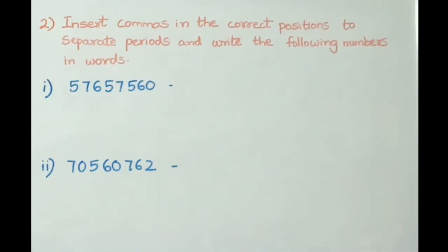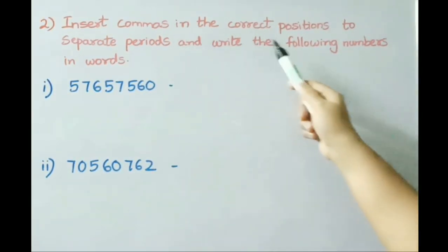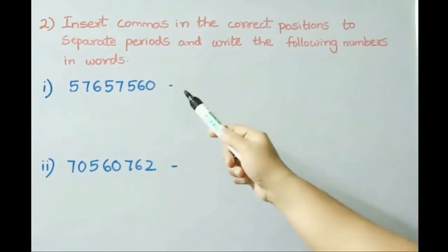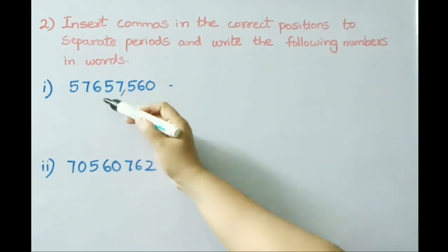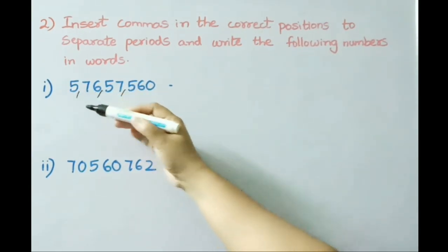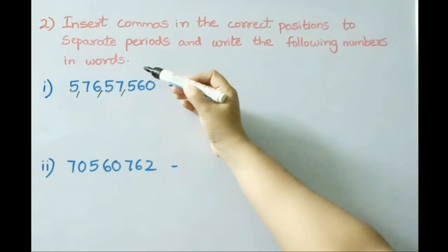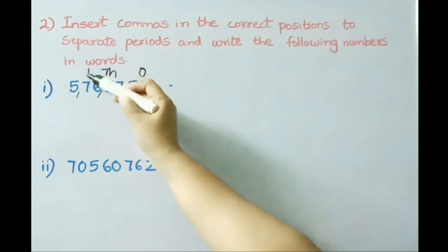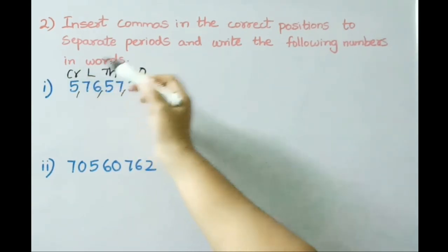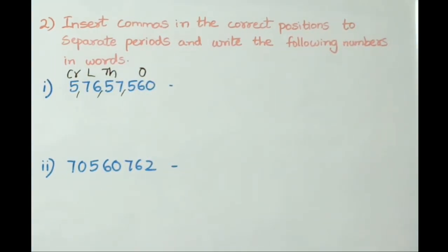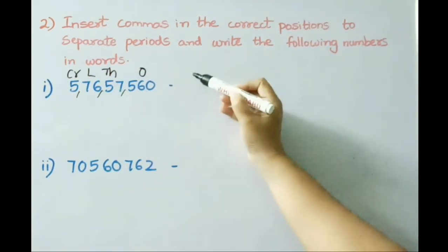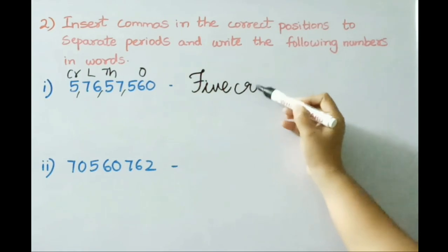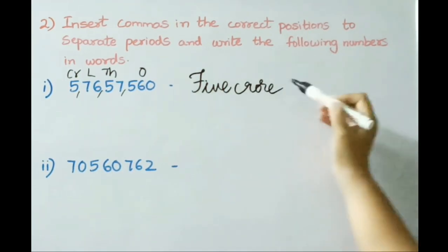Let us see the second sum: insert commas in the correct positions to separate periods and write the following numbers in words. Mention their periods: ones period, thousands, lakhs, and crores. Let us write this number name now: 5 crore, 76 lakhs.